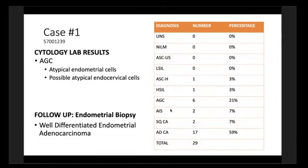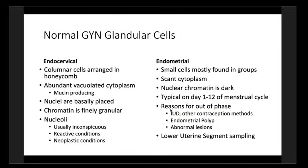Now let's talk about criteria, starting with normal. For endocervical cells, we're looking at columnar groups of tall, elongated cells with basally located nuclei. The cytoplasm is usually finely evacuated. Chromatin is generally finely granular. Nucleoli are usually not seen in normal glandular endocervical cells, but can appear with reactive or abnormal conditions.